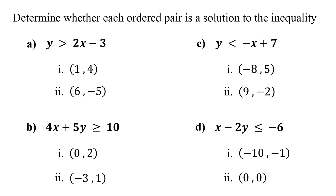First, substitute the x and y values from the ordered pair into the inequality. Then simplify. If the simplified inequality is true, the ordered pair is a solution. If it is false, the ordered pair is not a solution.